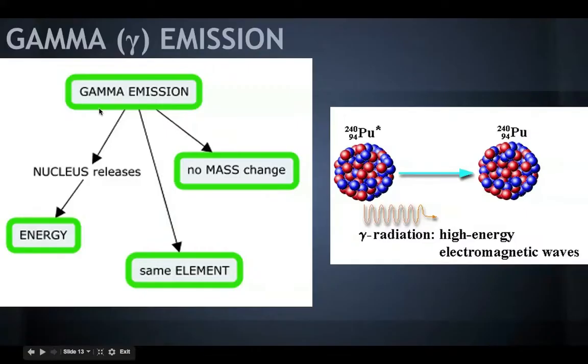Okay? And last but not least, we have gamma emission. With gamma emission, it's probably the simplest one to understand. Basically, a nucleus is just releasing energy. It's still the same element. There's no mass change. So if you have plutonium in our example right here, plutonium-240, it's still plutonium-240 over here. But in the meantime, it released a high-energy electromagnetic wave, or a gamma radiation, which is just pure energy. It doesn't have any mass.